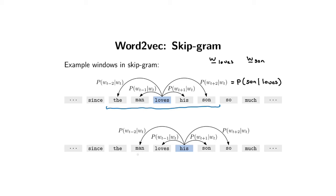A next window might look at the center word 'his,' trying to capture what comes before and after it. This is the underlying principle for the skipgram model: we try to model what comes before and after a given center word. In this example I use a window with two preceding and two following words, but that's a free parameter — we could use windows of three and three, or even one and one.